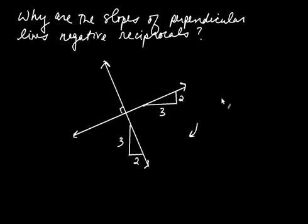If somebody asked you what's the slope of that line, you'd say rise over run. The rise is 2 and the run is 3.